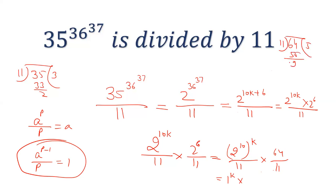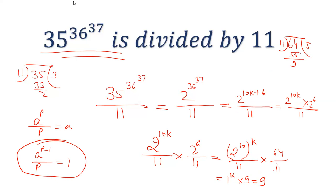So the expression becomes 2 to the power (10k + 6), which equals (2^10)^k times 2^6. Since 2^10 divided by 11 gives remainder 1, we get 1^k times 64. Now 11 times 5 is 55, and 64 minus 55 is 9. So the remainder is 9. The answer is 9, using Fermat's Little Theorem.